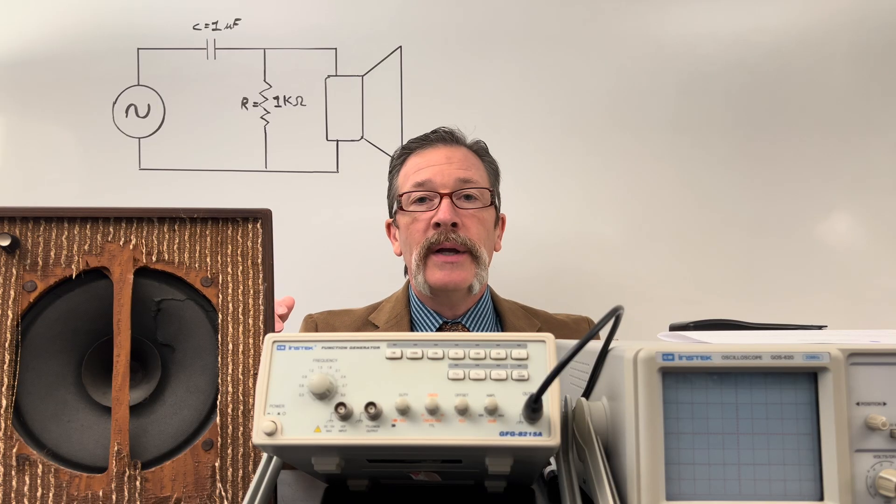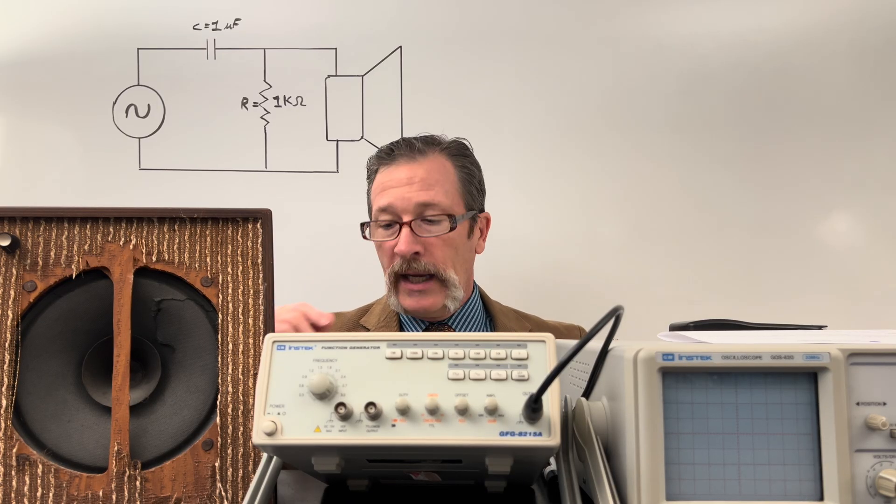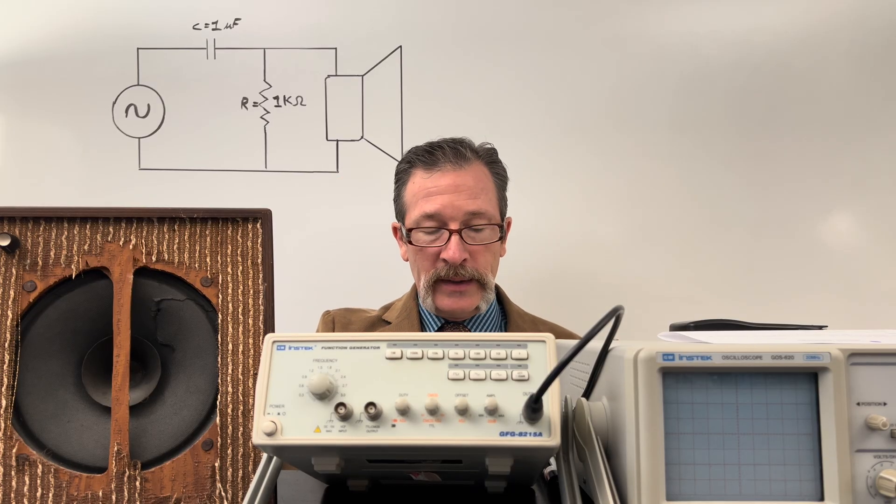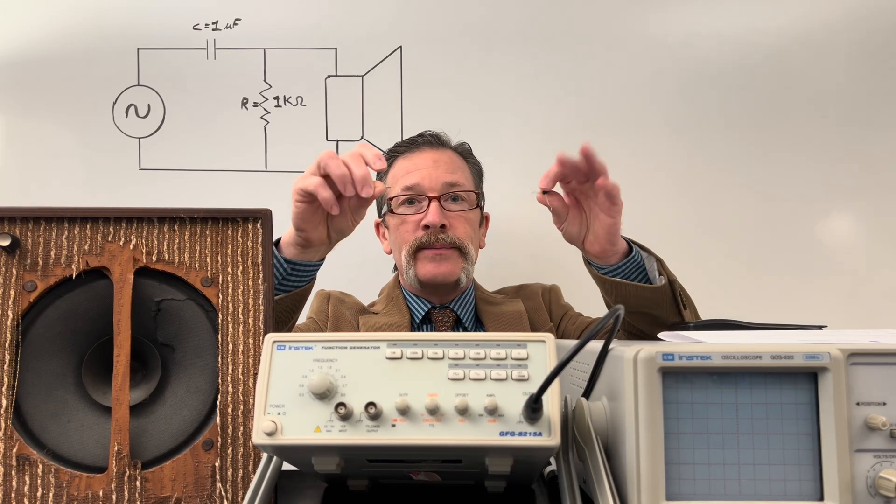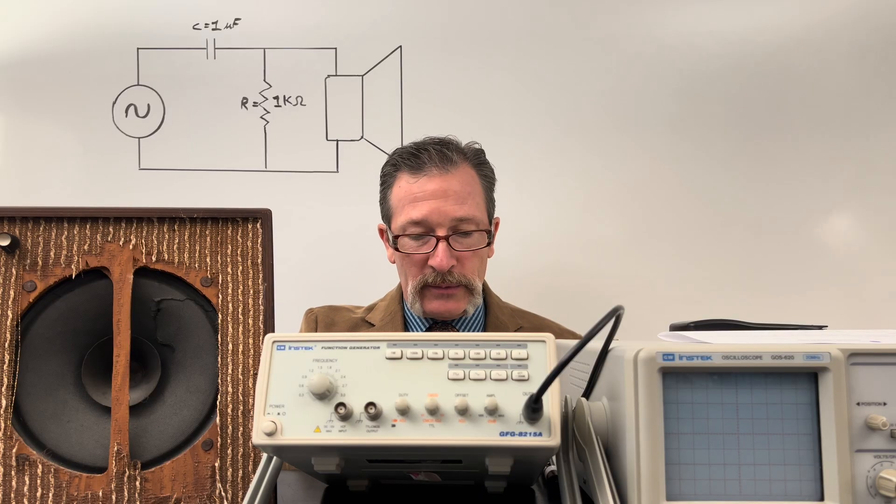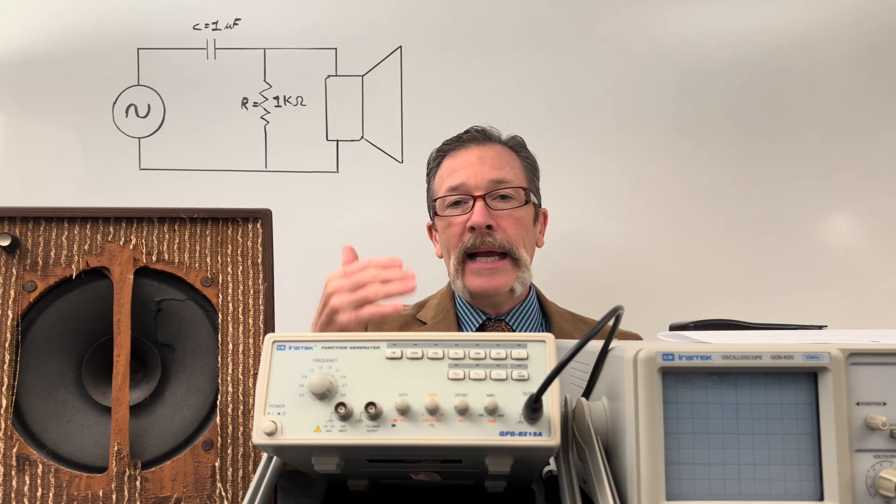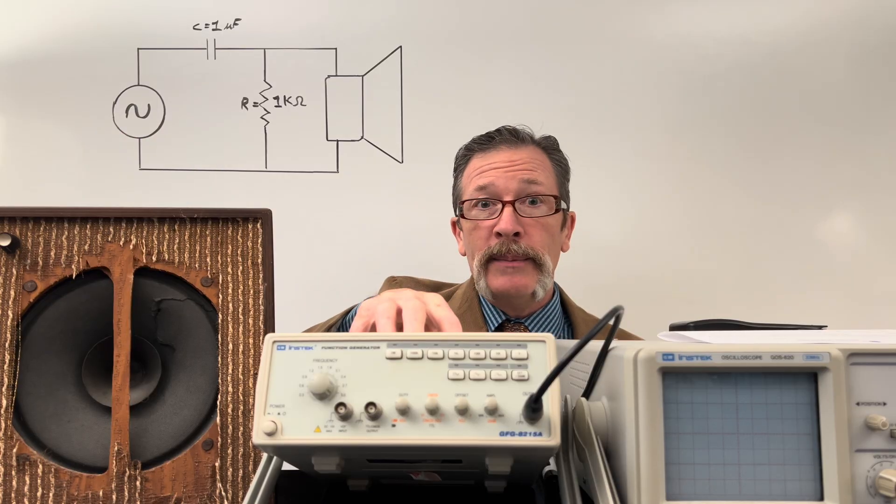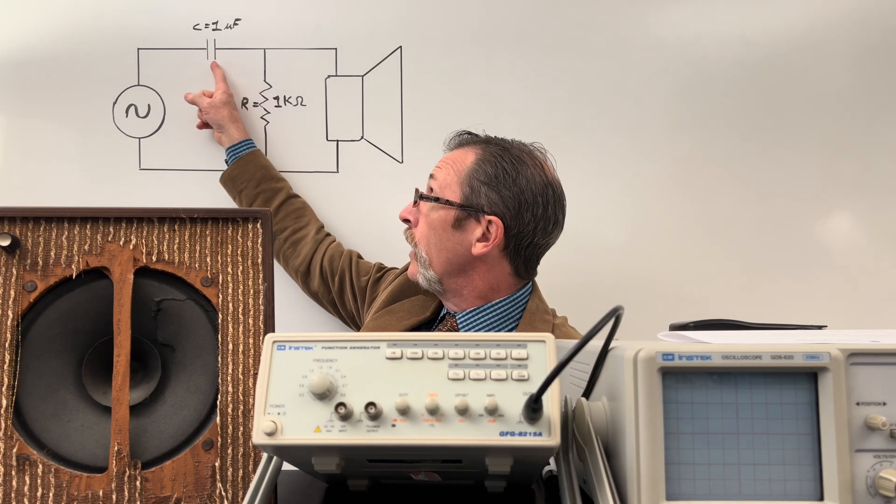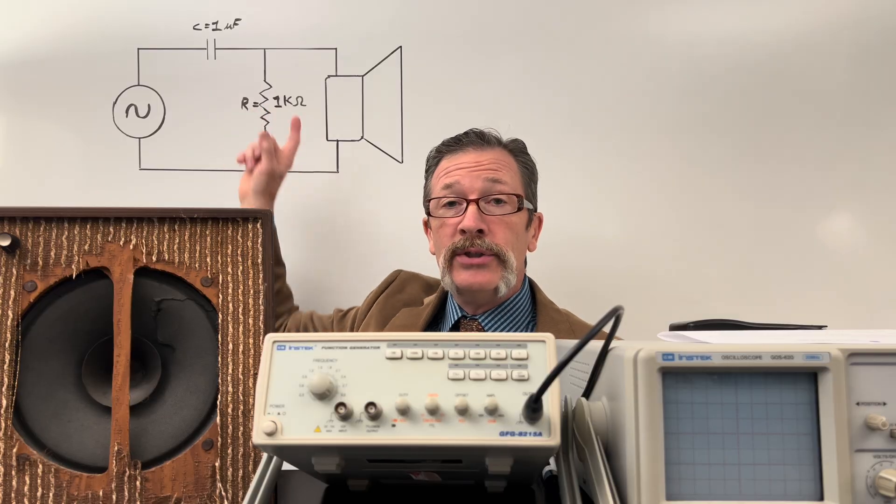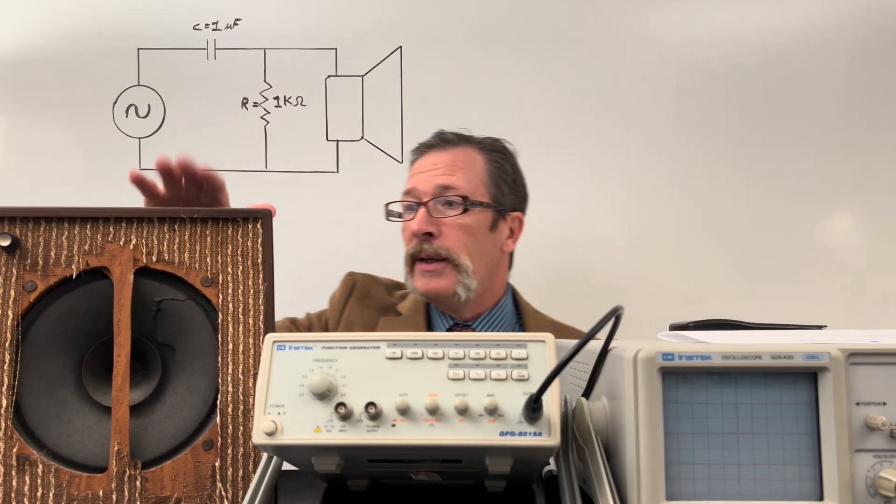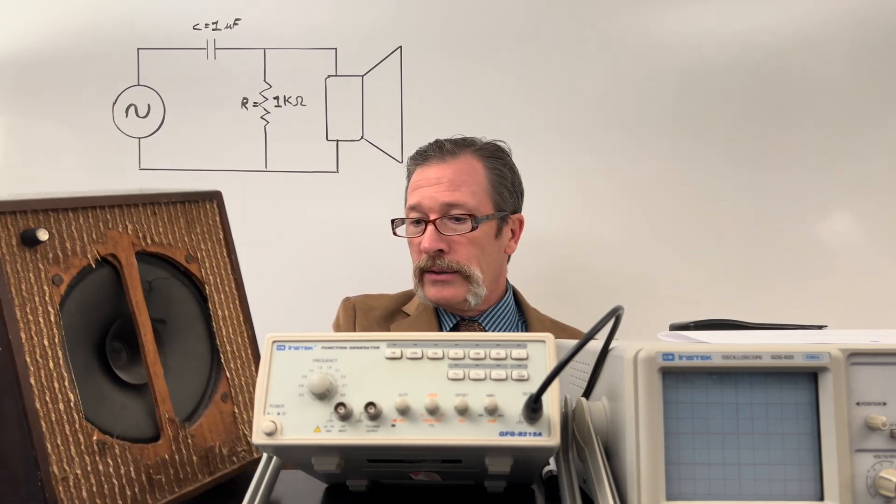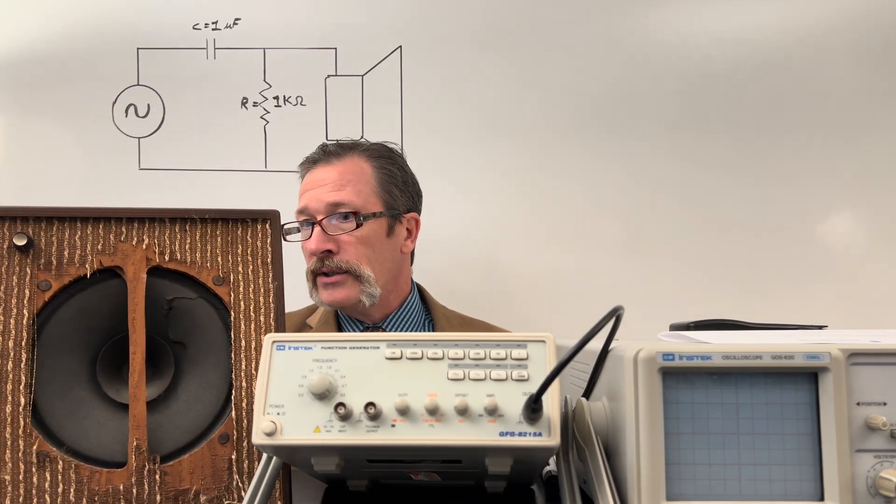For today's quiz we have a high-pass filter made using a simple capacitor and resistor. These are passive devices, meaning we don't need any extra power. We have an AC generator as our signal generator, and we'll put a capacitor and resistor as shown here. Over here is our speaker with yellow wire so you can see how the circuit works.